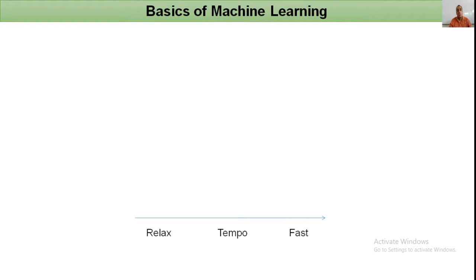Let's look at the basics of machine learning through an example. If a person loves to listen to songs, they can like or dislike a song. Their liking or disliking depends on two variables: the tempo of that song and the intensity of that song. Tempo ranges from relaxed to fast, and intensity ranges from light to soaring. We place tempo on the x-axis and intensity on the y-axis.